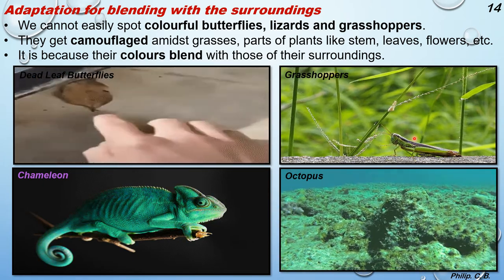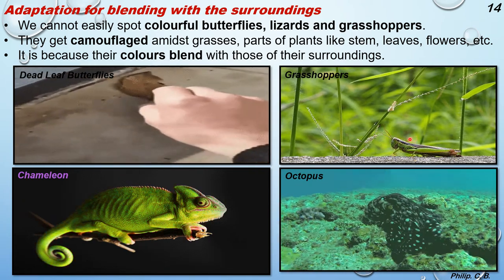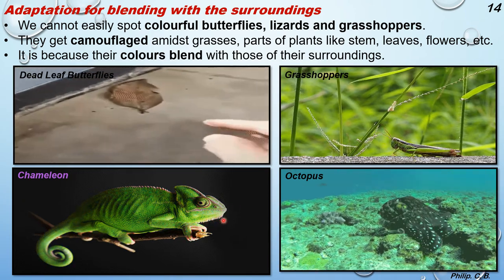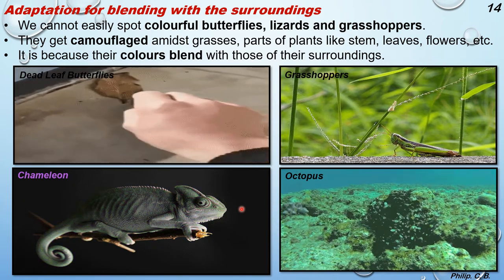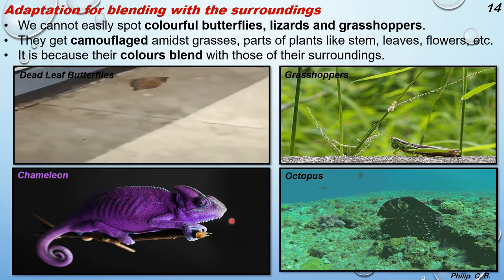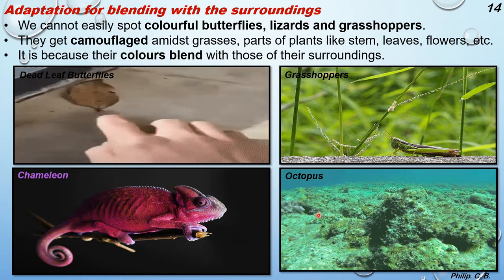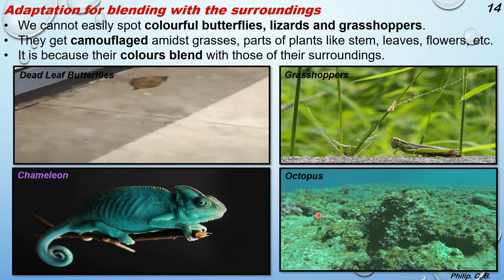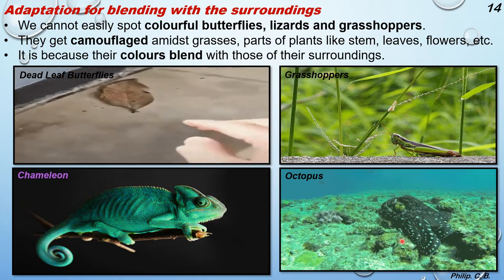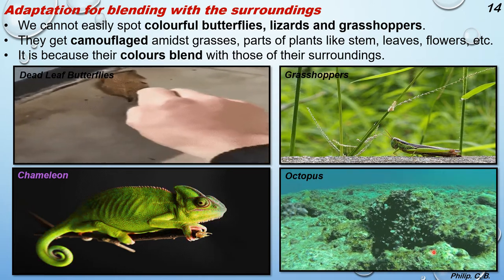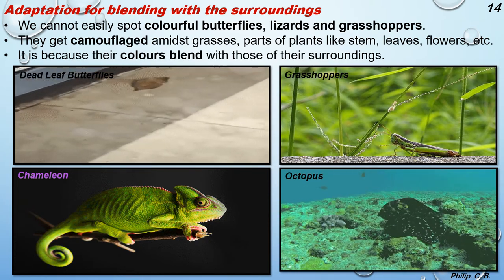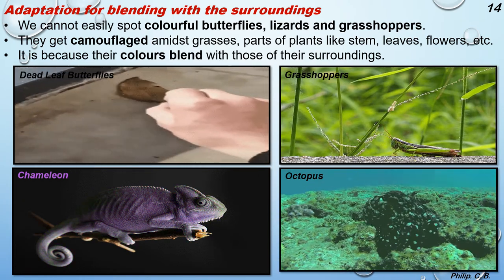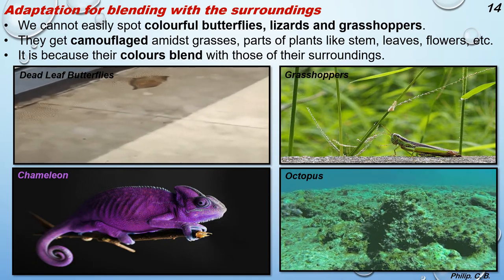A grasshopper is shown in a close-up view - from a normal distance it would not be easily recognized. The chameleon shows color changes - you can see three to four different colorations it changes to. Octopus can also camouflage - you can see it slowly taking on the coloration of the surrounding rocks, either to catch prey or to escape from larger predators. It's a beautiful image of octopus camouflaging in the surrounding rocks.